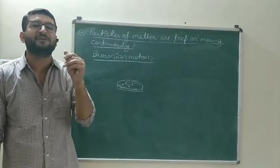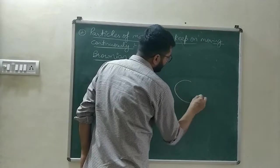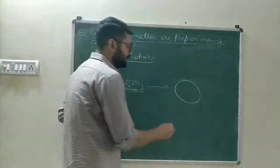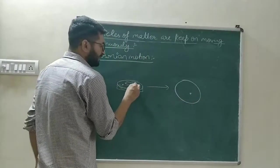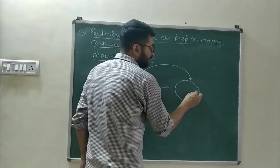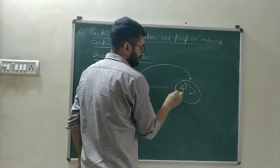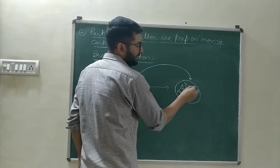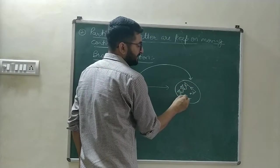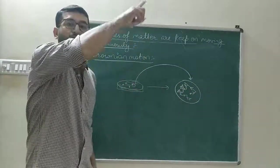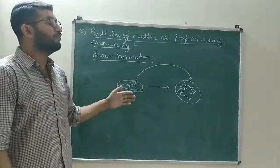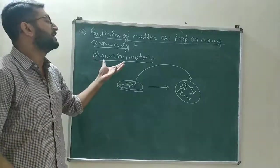When he observed that petri dish over a microscope, he observed that the pollen grain particle moves in a random direction — it goes first here, then there, then another direction. This random, zigzag motion is known as Brownian motion. The zigzag motion of the particles of a matter is known as Brownian motion.